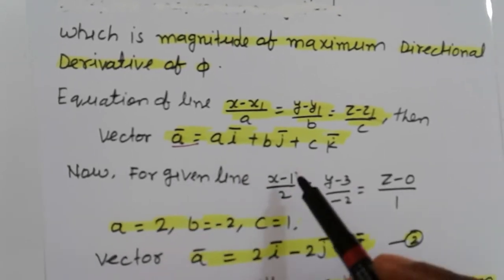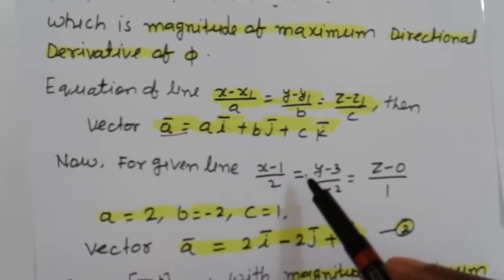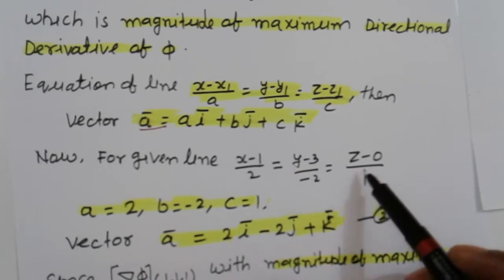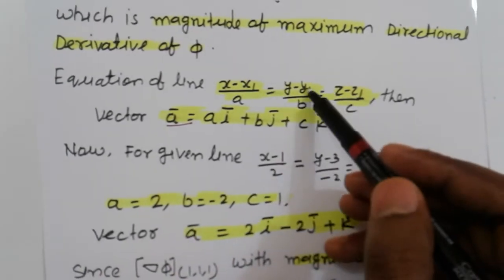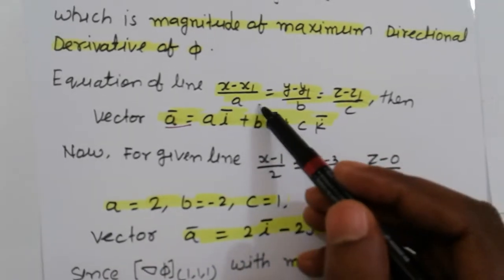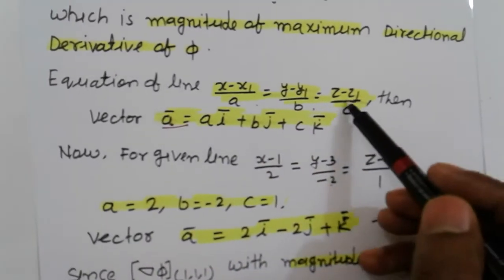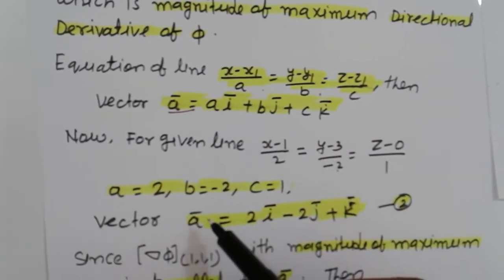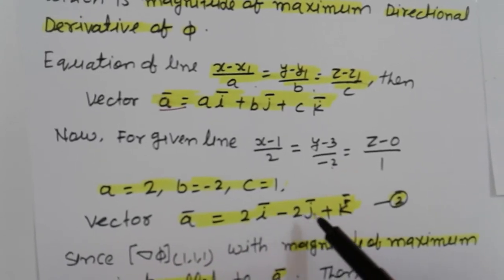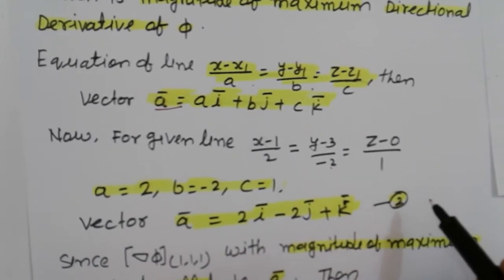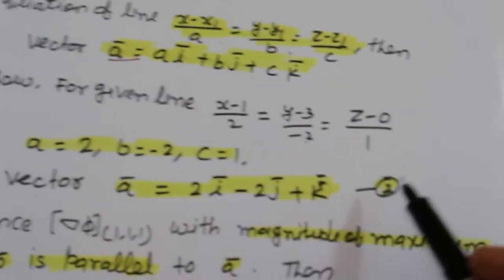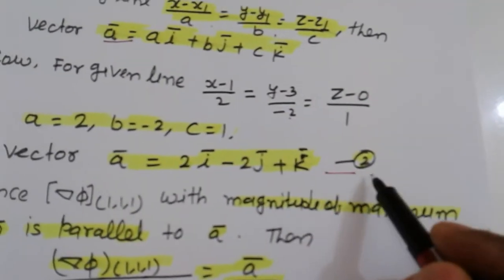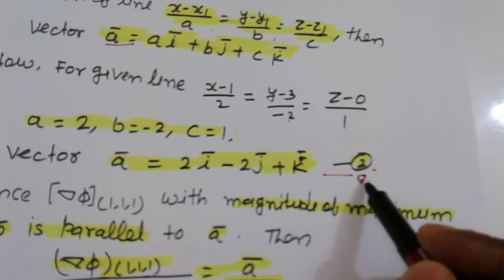For given line x - 1 upon 2, y - 3 upon -2, z - 0 upon 1. Comparing, we get a equal to 2, b equal to -2, and c equal to 1. Vector a equals 2i minus 2j plus k, which is equation number 2.